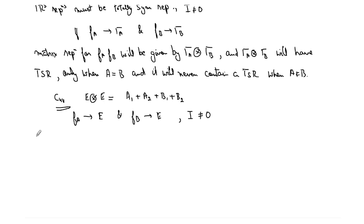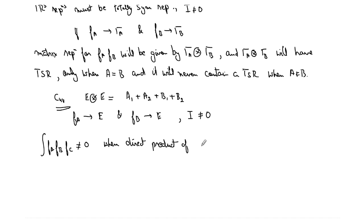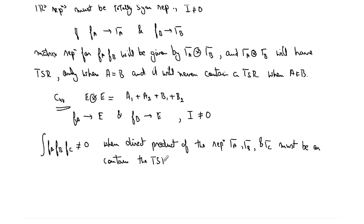Now let us look at the integration of a triple product — whether it will be equal to zero or not. This integral will not be equal to zero when the direct product of representations tau_a, tau_b, and tau_c (corresponding to f_a, f_b, and f_c respectively) must contain the totally symmetric representation at least once.